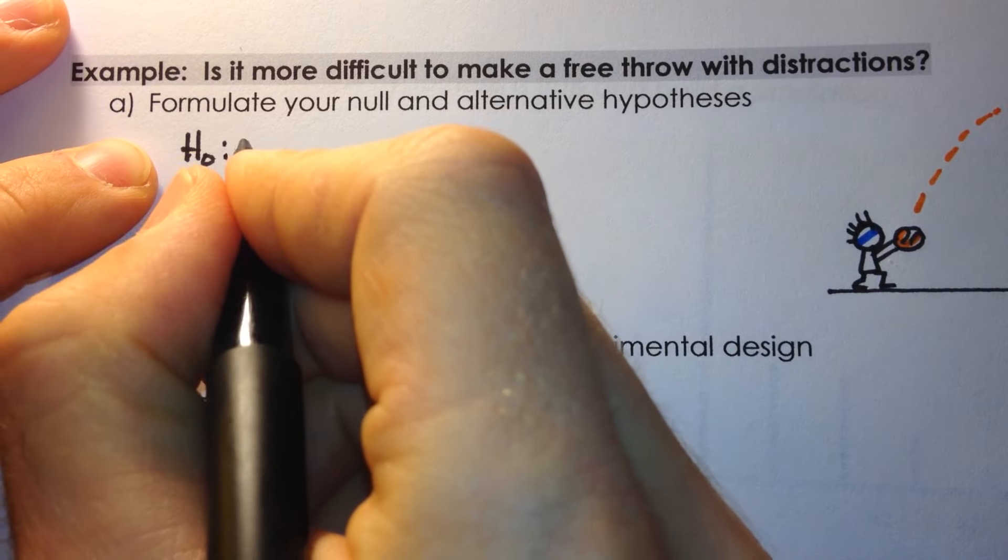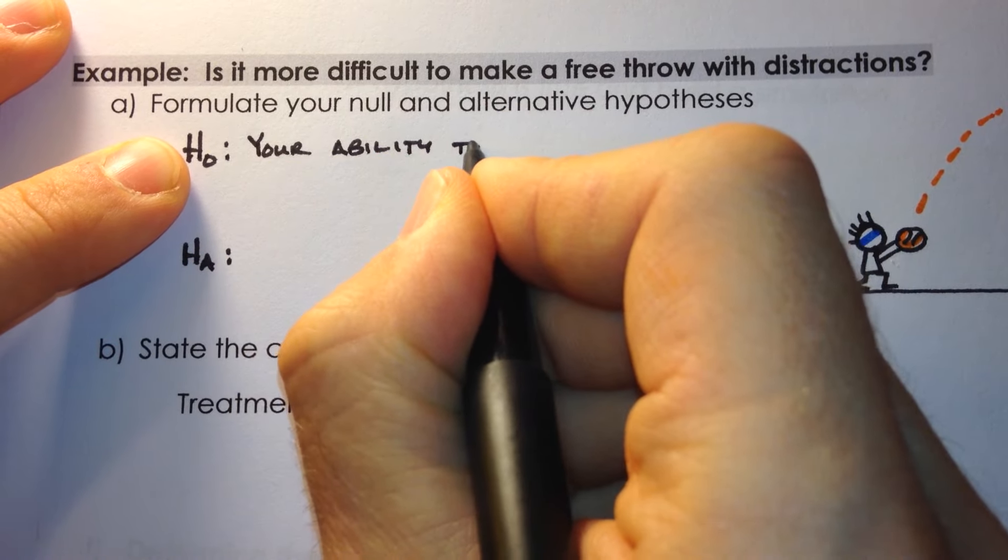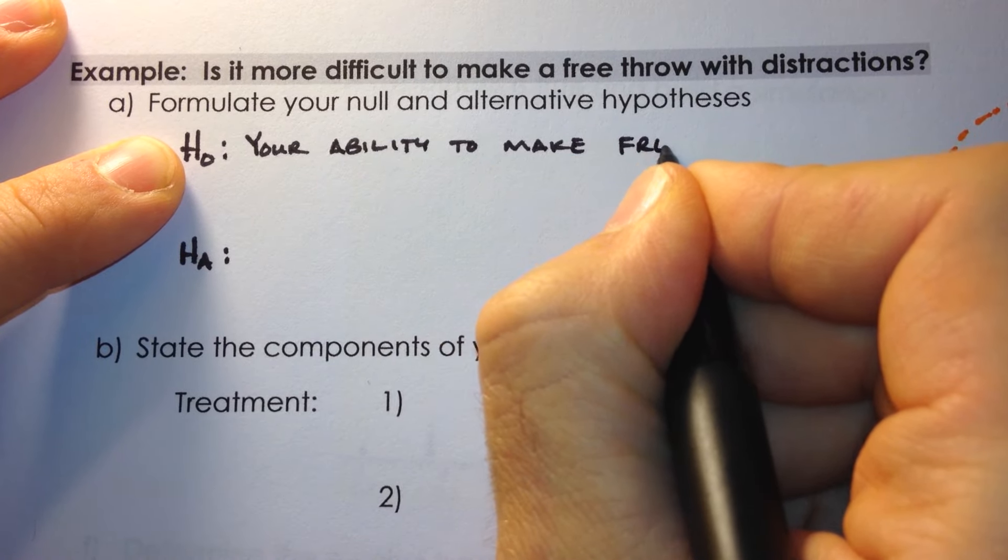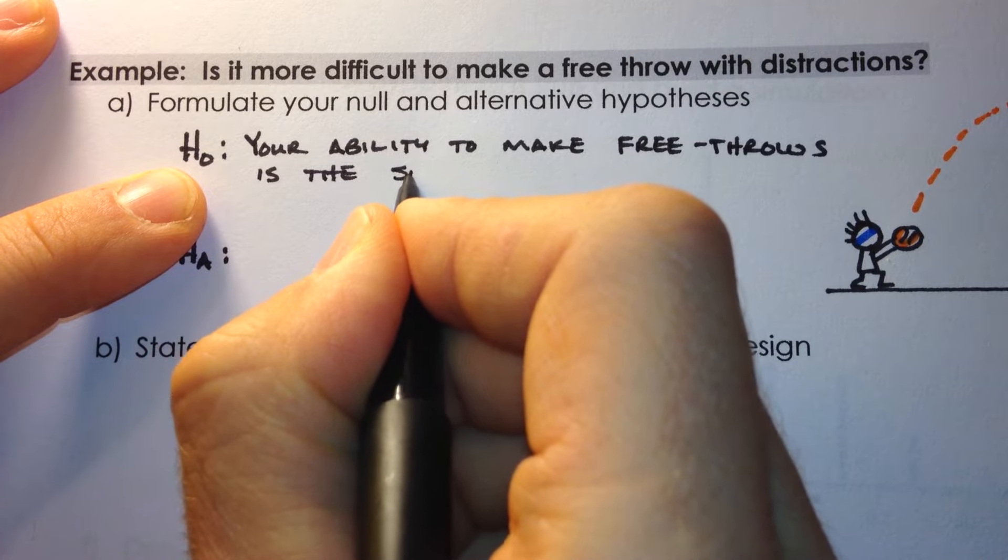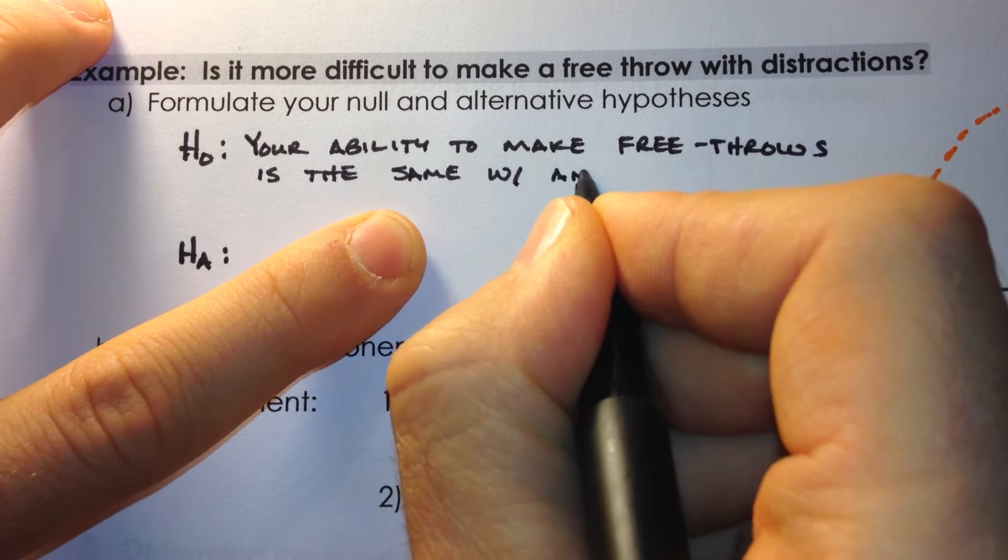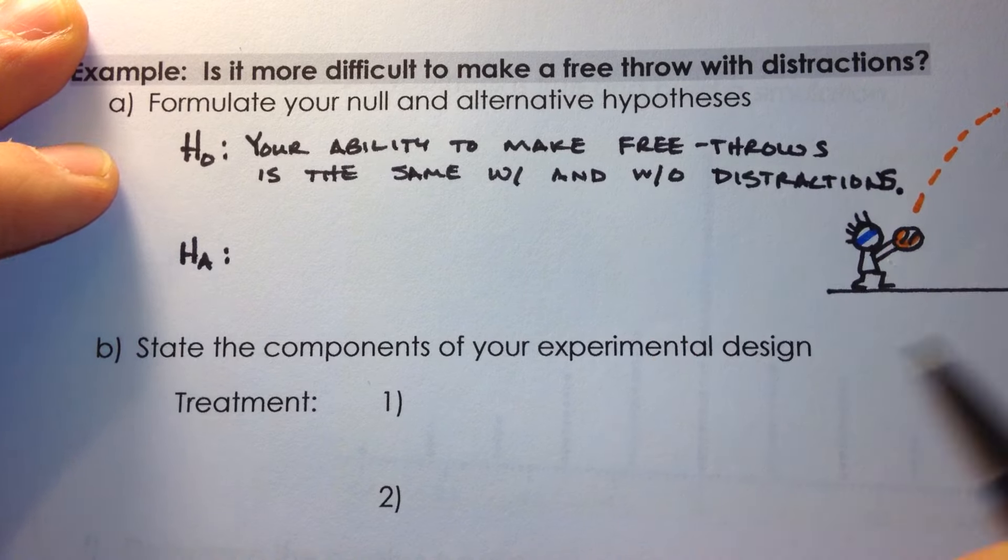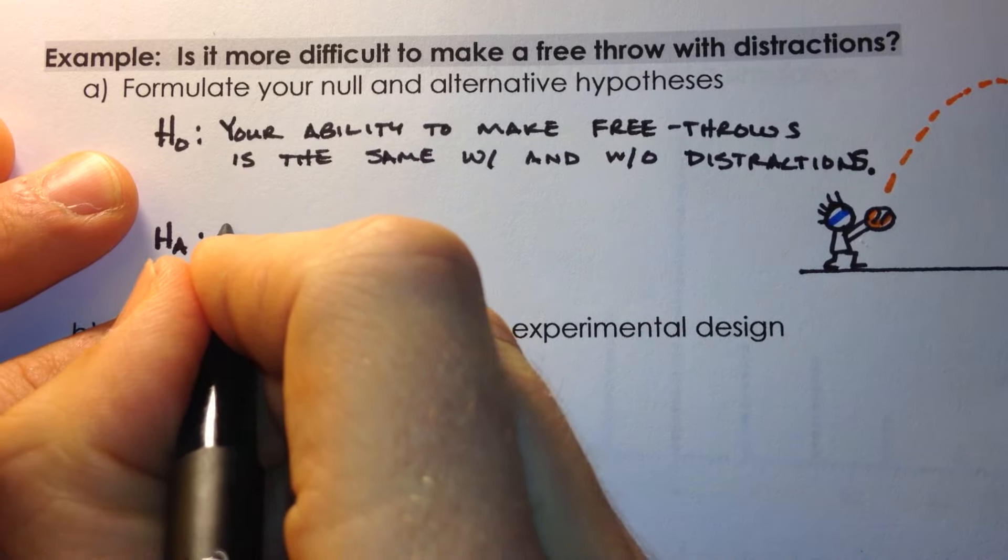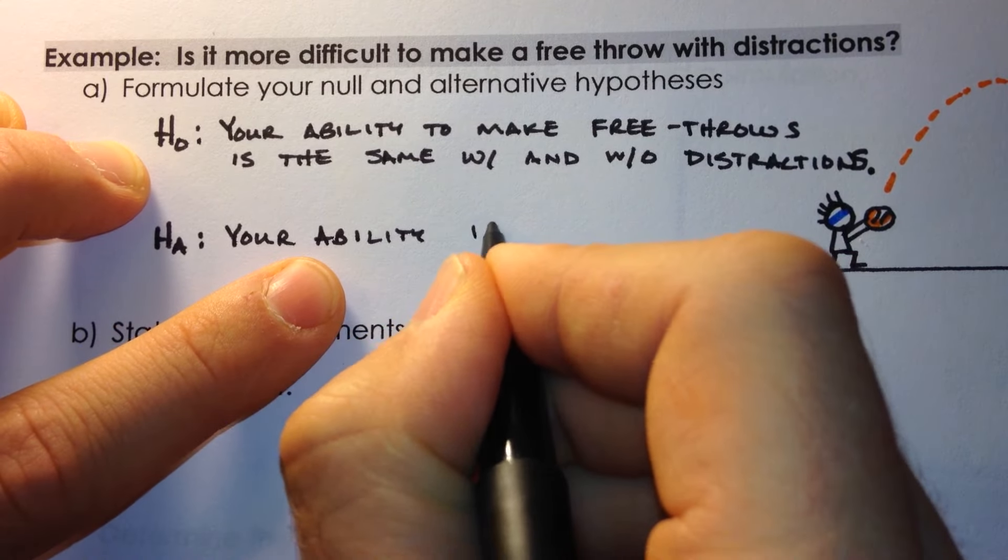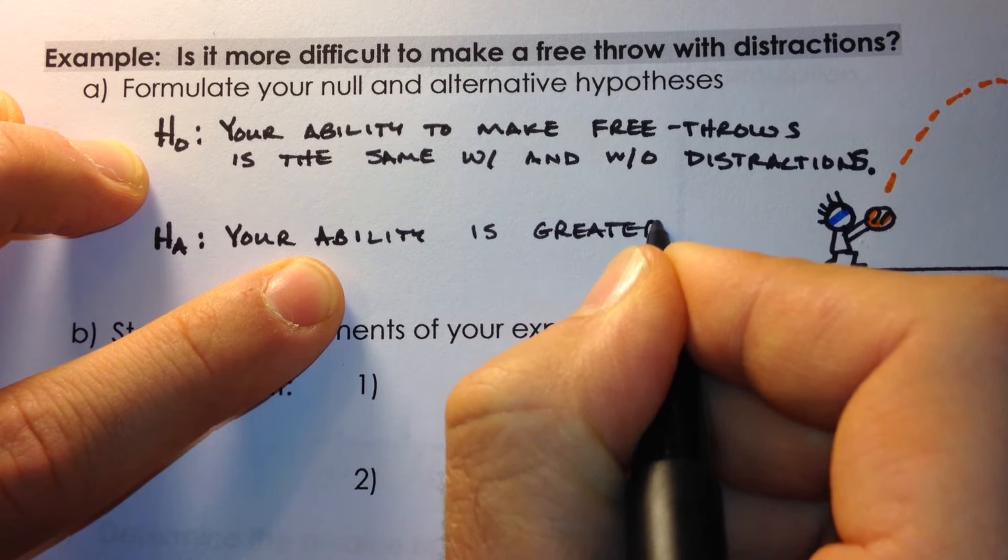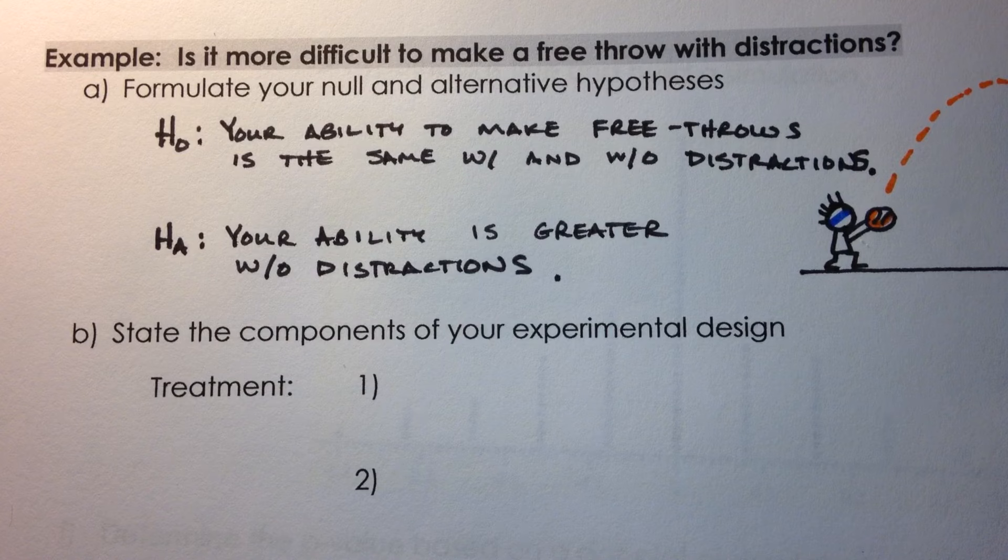So null hypothesis is always that ability doesn't change. So your ability to make free throws is the same with and without distractions. The alternative hypothesis is that your ability is greater without distractions. We think that the distractions will harm your ability.